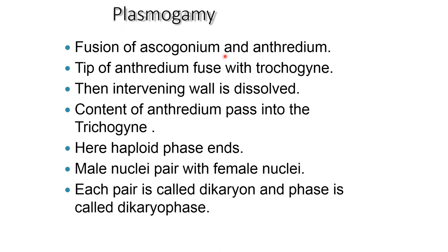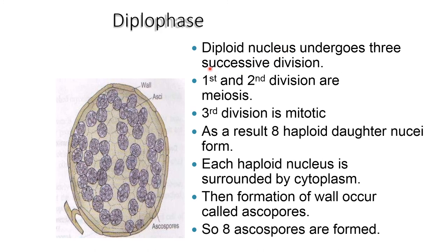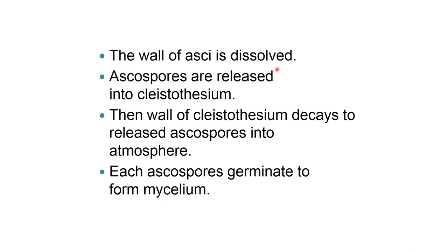Plasmogamy: fusion of the ascogonium and antheridium takes place. The tip of the antheridium fuses with the trichogyne. The intervening wall is dissolved and the contents of the antheridium pass into the trichogyne. Here the haploid phase ends. The male nuclei pair with the female nuclei; each pair is called a dikaryon and the phase is called the dikaryophase. The diploid nucleus undergoes three successive divisions: the first and second divisions are meiosis and the third division is mitosis. As a result, eight haploid daughter nuclei form. Each haploid nucleus is surrounded by cytoplasm, and then formation of a wall occurs.